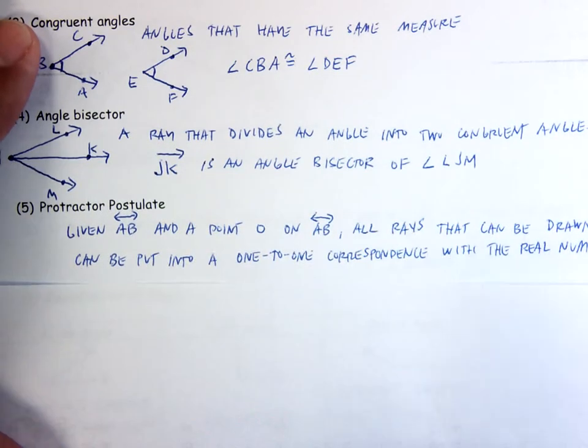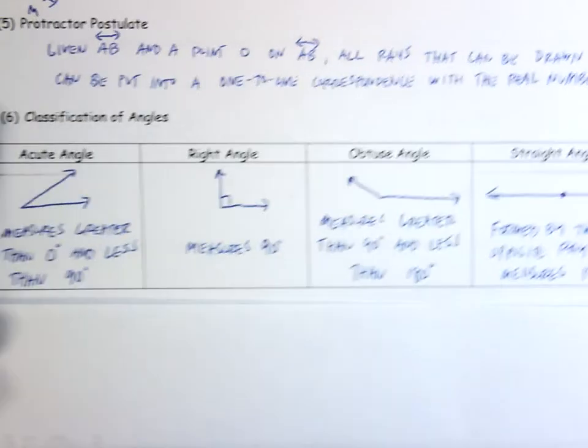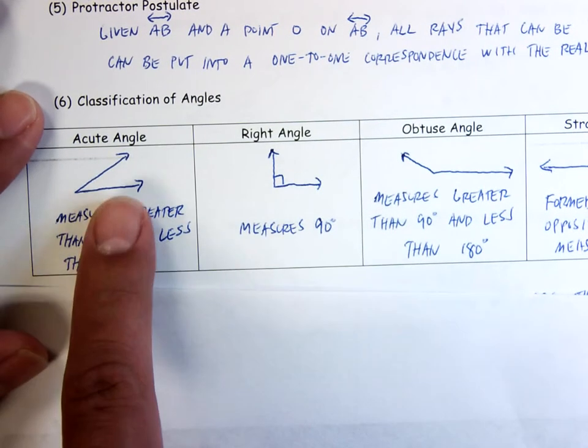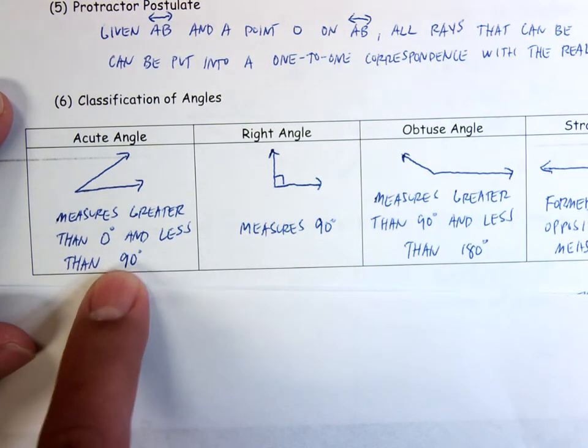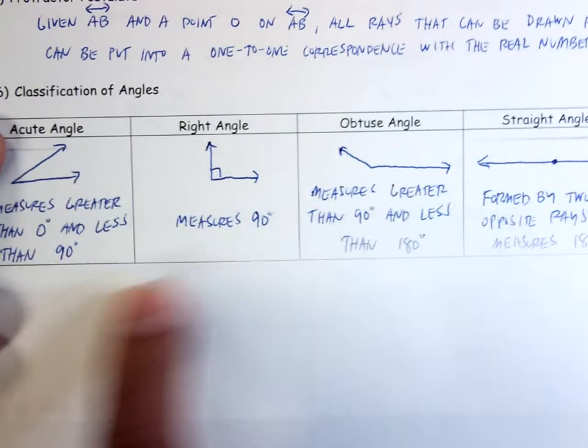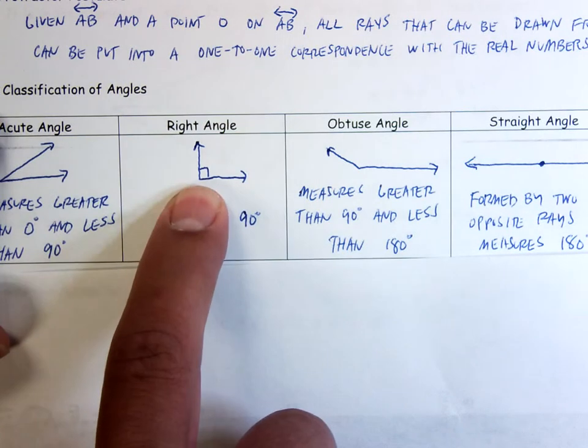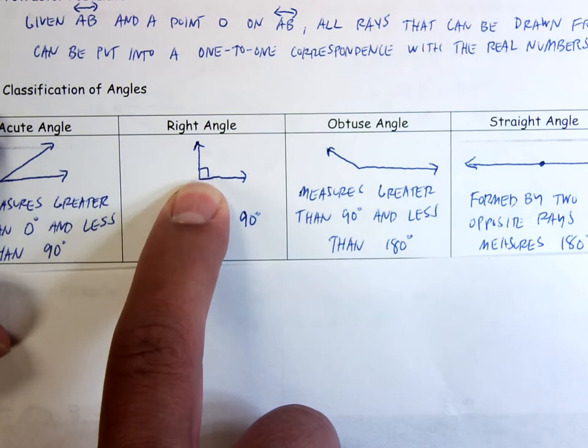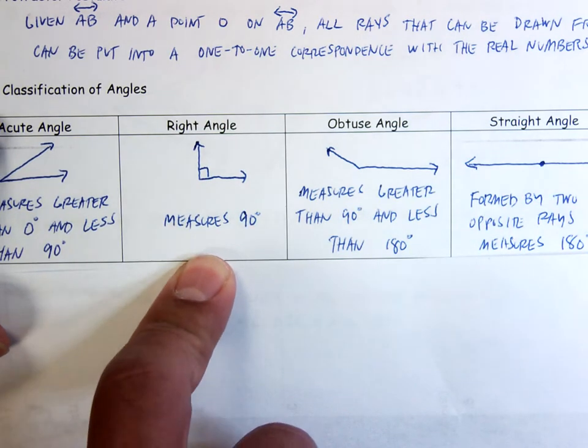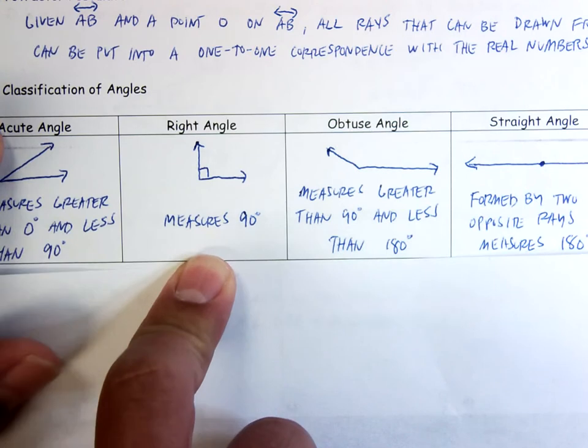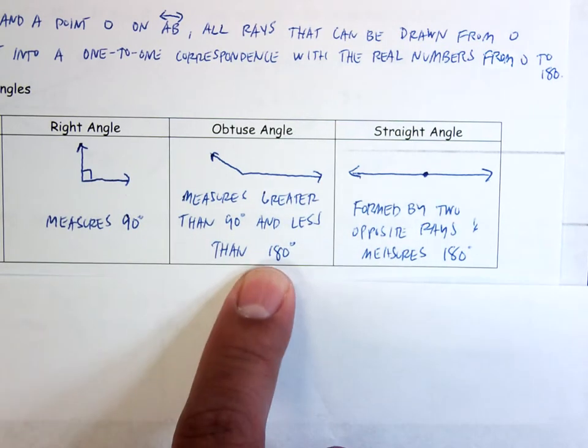Protractor postulate - you know what, we're going to skip that. Don't worry about writing that one down. We can talk more about that in class. Most of these we're going to be pretty familiar with. An acute angle measures greater than zero degrees and less than 90 degrees. A right angle measures 90 degrees. Like I said with congruency, it must have a box or tell you in some way that it's a right angle. You can't ever just look at an angle and assume it looks like a right angle, therefore it is a right angle. You have to be told. An obtuse angle measures greater than 90 degrees and less than 180 degrees.